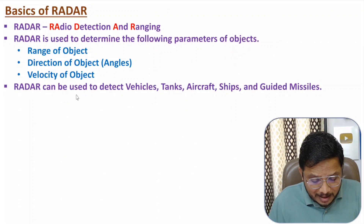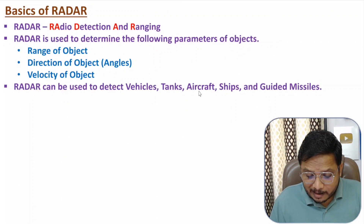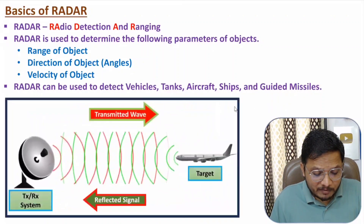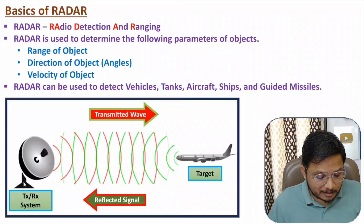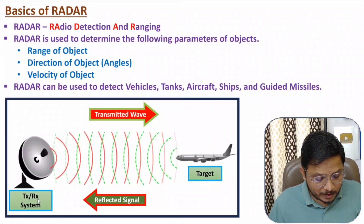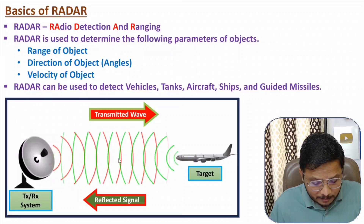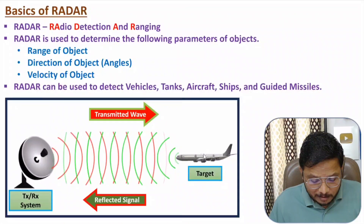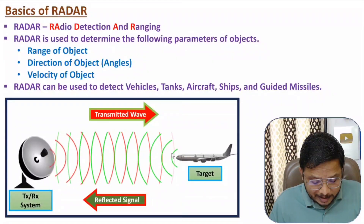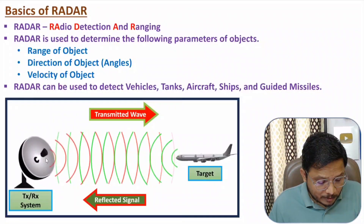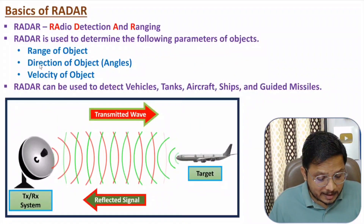Radar system can be used to identify unknown vehicles, tanks, aircraft, ships, and guided missiles. Here you can observe we have a radar system that has an antenna. This antenna is connected with the transmitter and receiver system. With the use of the transmitter we will be transmitting radio waves into space — by red color you can observe radio waves propagating in space. From the unknown object, the radio signal gets reflected, shown by green color, and based on the transmitted and received signal, the radar can identify range, direction, and velocity.